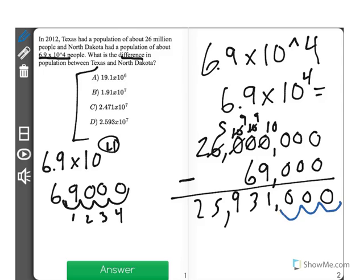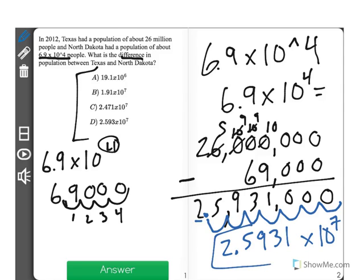1, 2, 3, 4, 5, 6. My seventh will separate my first digit, 2, from my second 5, 9, 3, 1 times. I said I moved it 7 times, times 10 to the seventh, for the correct answer, which is D.